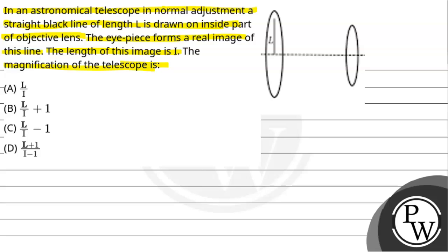You can see in the diagram, this is the objective lens, the bigger one, and this smaller one is the eyepiece. In the bigger objective lens, a black line is drawn of length capital L. Its image will be formed here in the eyepiece, which will be real.